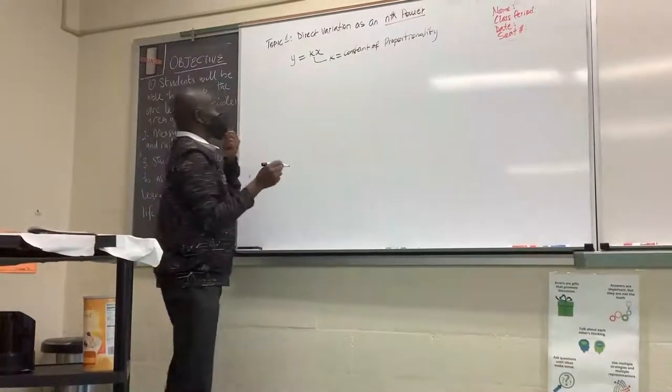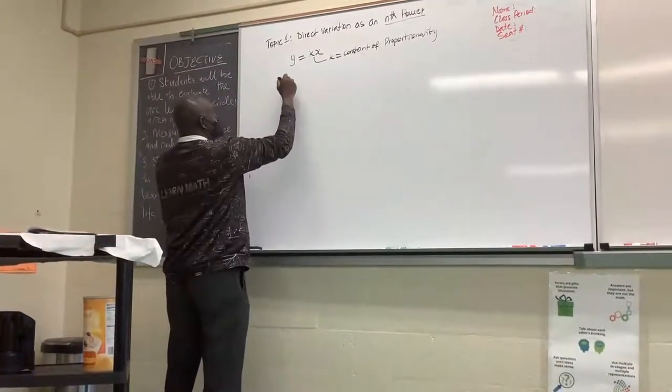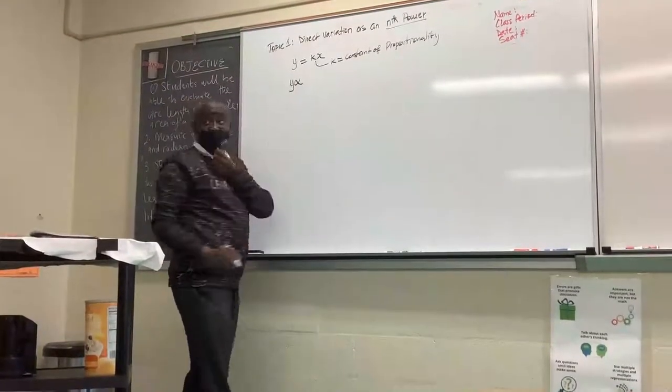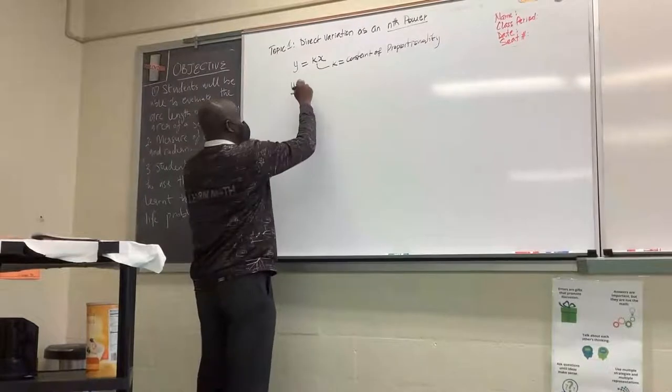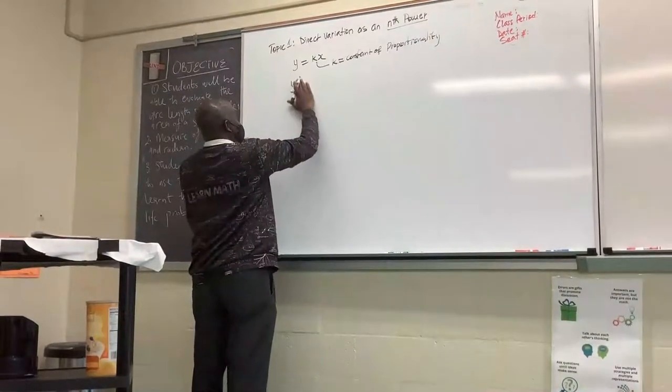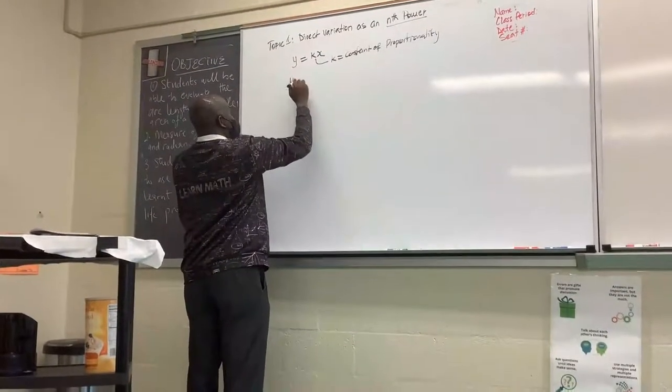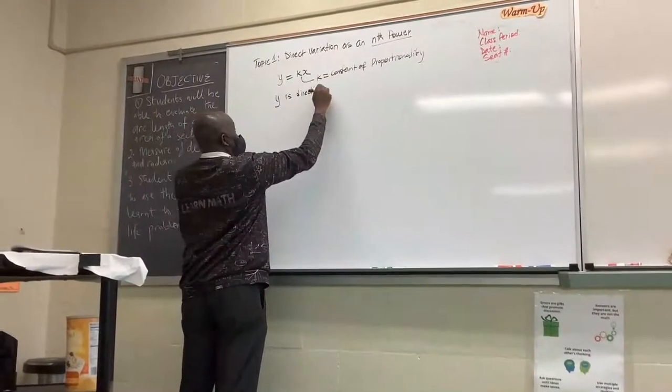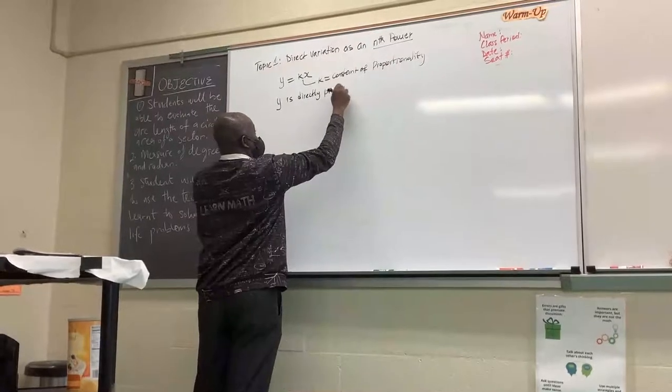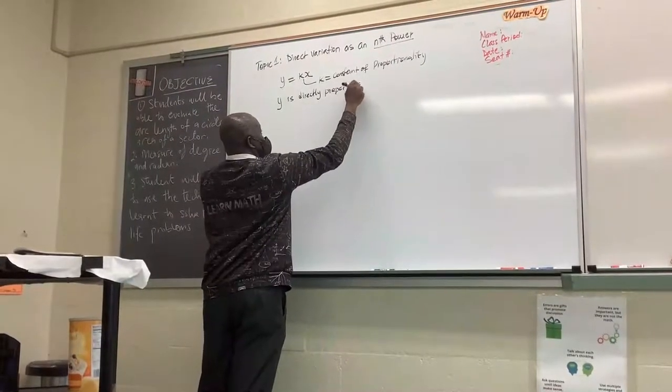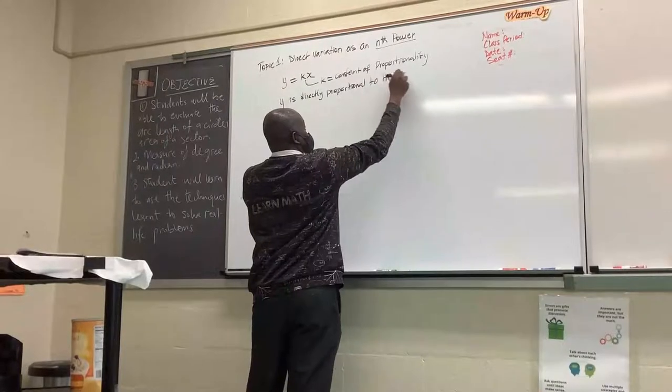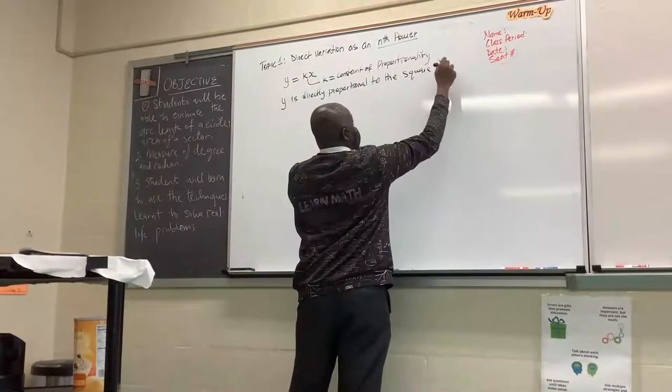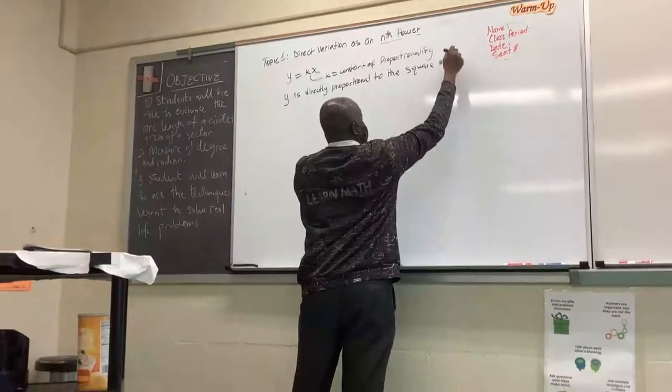So now here it goes. We can say that y is directly proportional to the square. Let me write it down. Y is directly proportional to the square of x.